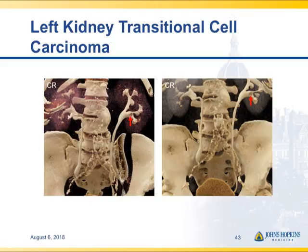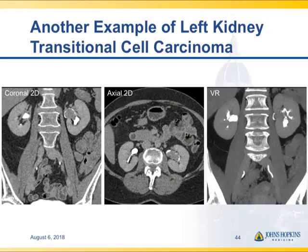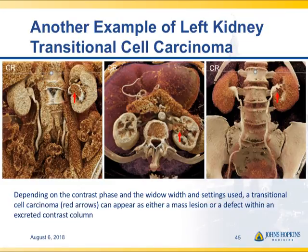Here you can see the filling defect in the patient's lower pole calyx of the left kidney — very nice visualization. Here's another case with a mass in the left renal pelvis, nicely seen. On the MIP coronal delayed phase view you can see the distortion and destruction of the renal pelvis, the calyceal changes — a very nice example of transitional cell carcinoma. On cinematic rendering you can see the soft tissue mass filling the renal pelvis, the destruction of the calyces, and the distortion of the renal pelvis on the far right image.